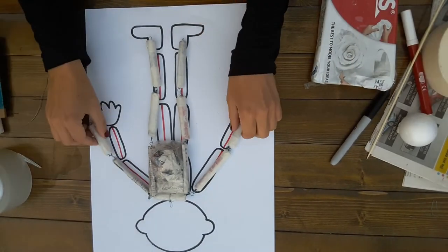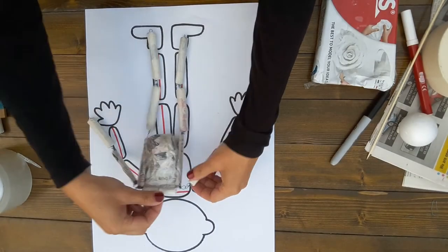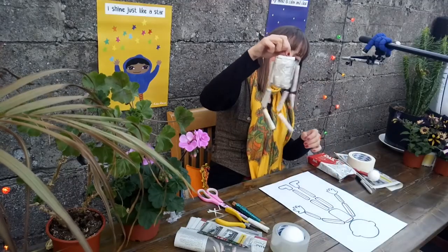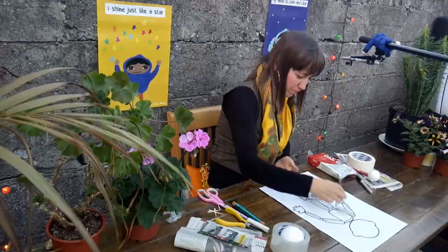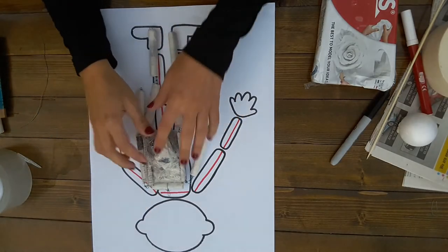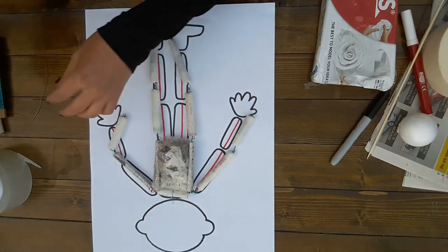Okay, so now once we have the limbs all attached, we should have something like this—the body. And now the next step is the head.